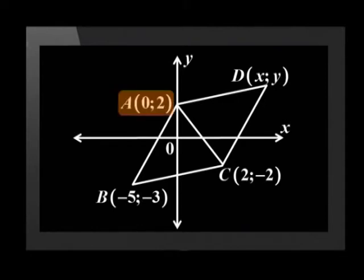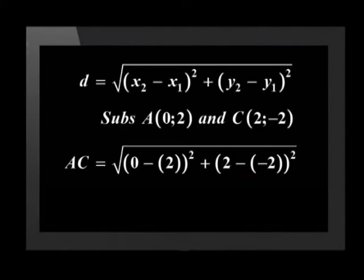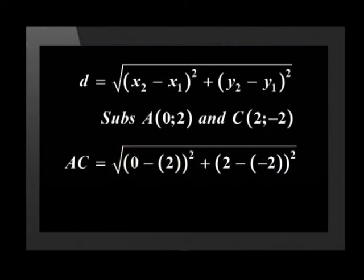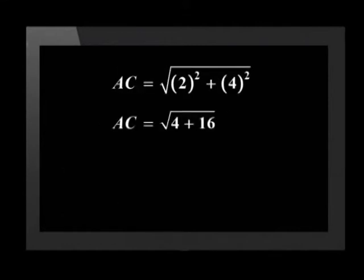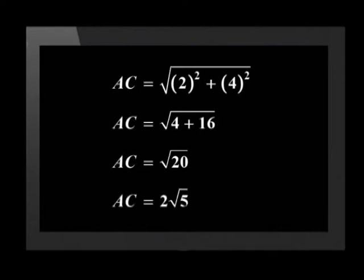The question asks us to find the perimeter of triangle ABC, so we still need to find the length of the other two sides and then add them together using the distance formula. Let's substitute point A(0, 2) and C(2, -2) into the distance formula. AC equals the square root of (0 minus 2) squared plus (2 minus negative 2) squared. The first bracket gives negative 2 and the second gives 4. Negative 2 squared is 4, and 4 squared is 16. 4 plus 16 equals 20, which simplifies to 2 times the square root of 5.